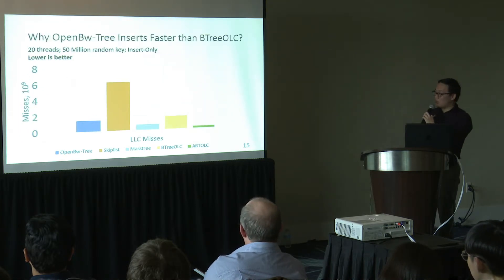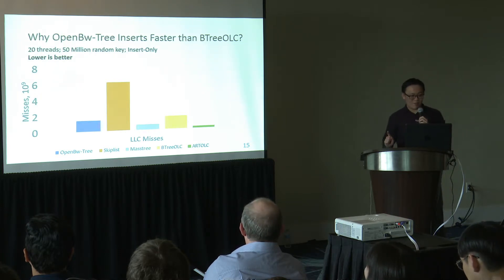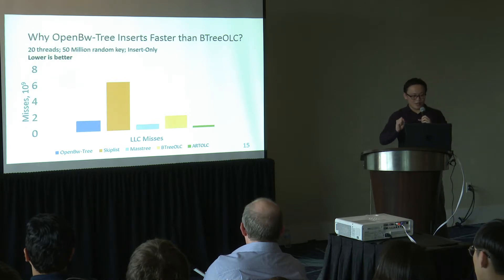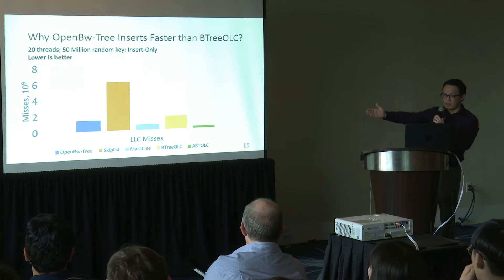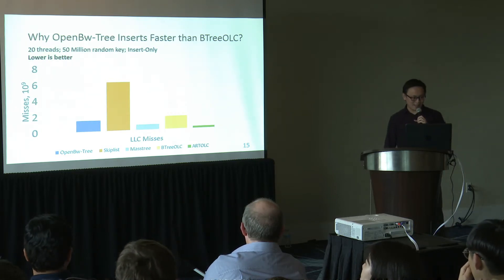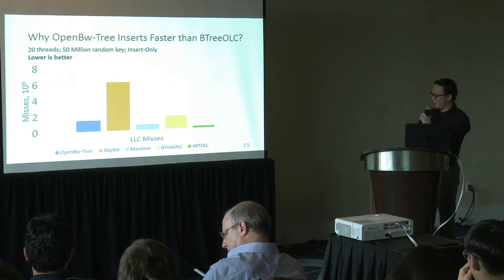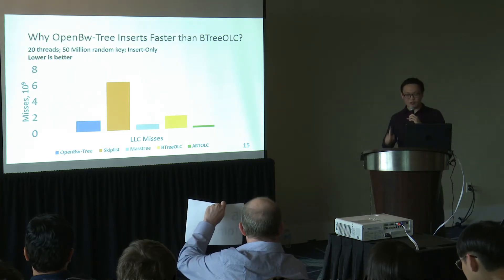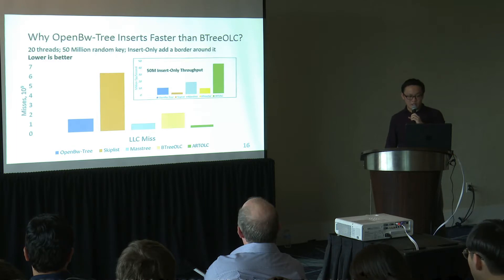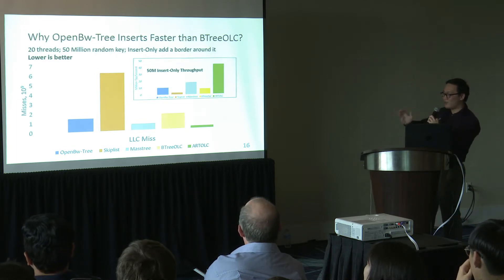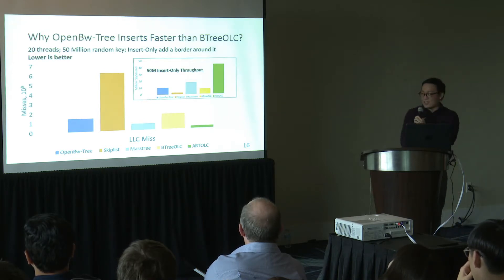After these two workloads, a question arises: why does OpenBWTree insert faster than B+ Tree with OLC? We re-ran the insert-only workload with 20 worker threads and 50 million randomly generated keys and measured last-level cache misses using the Linux utility perf. The Y-axis is number of cache misses in billions, X-axis is index type. Skip list has the highest cache misses due to its linked structure, followed by B+ Tree, then BW Tree, Masstree, and ART. There is a clear correspondence: higher cache miss numbers lead to lower throughput for any index in this experiment.